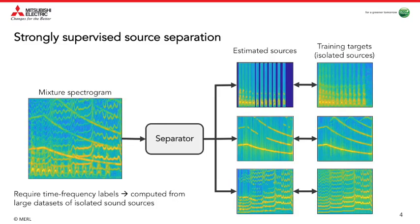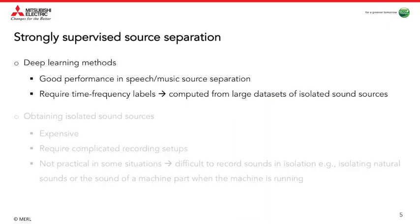In a fully supervised separation scenario, the time-frequency representations built from isolated sources are used as targets in model training. We refer to such targets as strong labels, as they provide information about sound classes at the time-frequency bin level. Supervised mask inference methods, especially those using deep neural networks, have become very popular over the past decade, mainly due to their successful performance in areas such as speech enhancement, speech separation, and music separation. These methods typically require a large dataset of isolated sound sources to construct training targets for estimating the time-frequency masks given the sound mixtures.